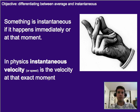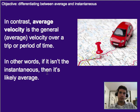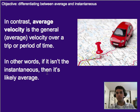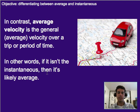In contrast, average is going to be the general velocity, give or take a little bit, over a period of time — meaning you can go a little bit faster or a little bit slower at some points, but if you lump it all together and average it out, then your approximate velocity for the trip was whatever the value is.